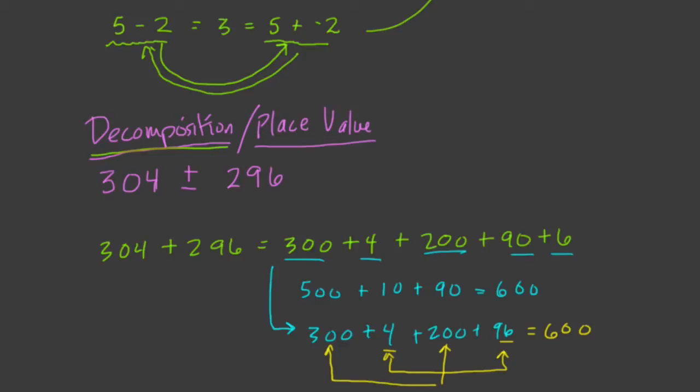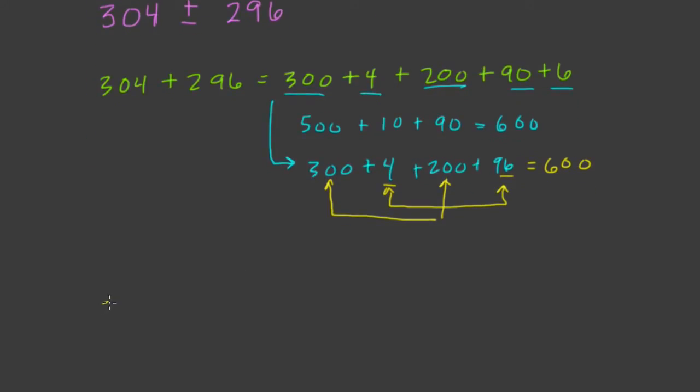And the same thing is true for subtraction. So, subtraction here, 304 minus 296. Well, here, again, I think that the place value and decomposition technique works nicely for subtraction, but better for addition. So, I would rewrite this as addition. How can I do that? Well, subtracting a positive is the same thing as adding a negative. So, 304 plus negative 296. When I think about it this way, it's much easier to work with because now what happens is I have 304 again.